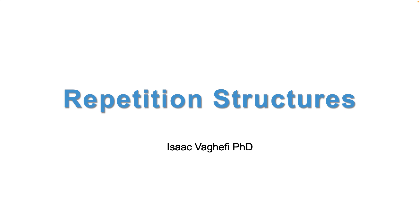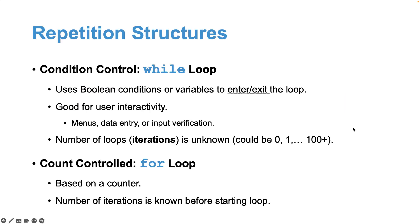For example, if we had a case of calculating commission for salespeople, rather than writing the code 10 times we want it to run for all 10 salespeople at the store consecutively. So instead of writing this sequence of statements over and over again, what we can do is write a repetition structure, commonly known as a loop structure.